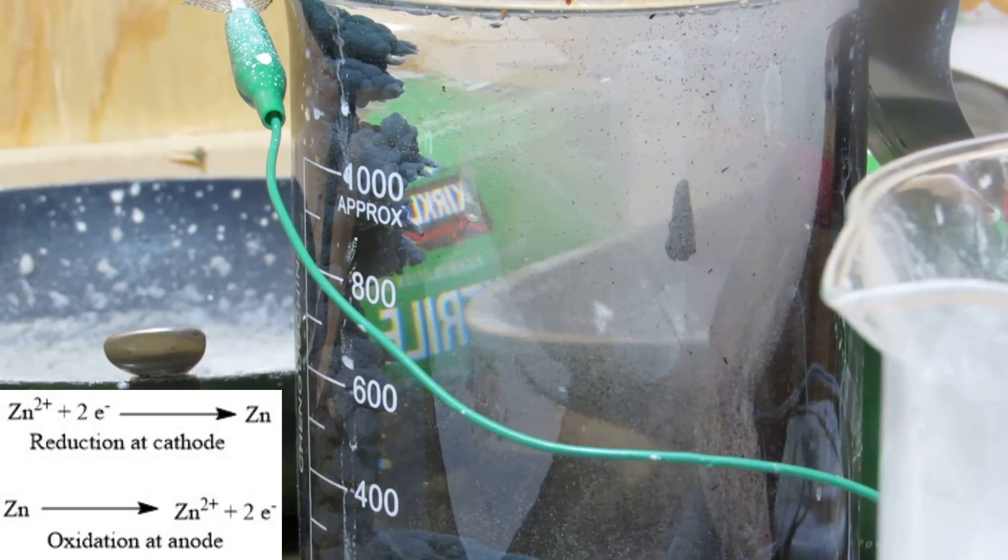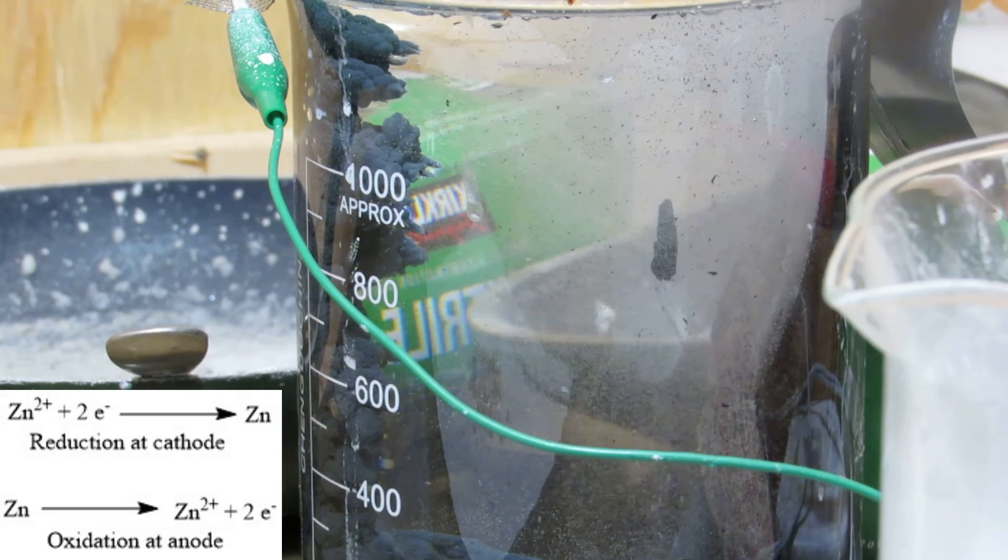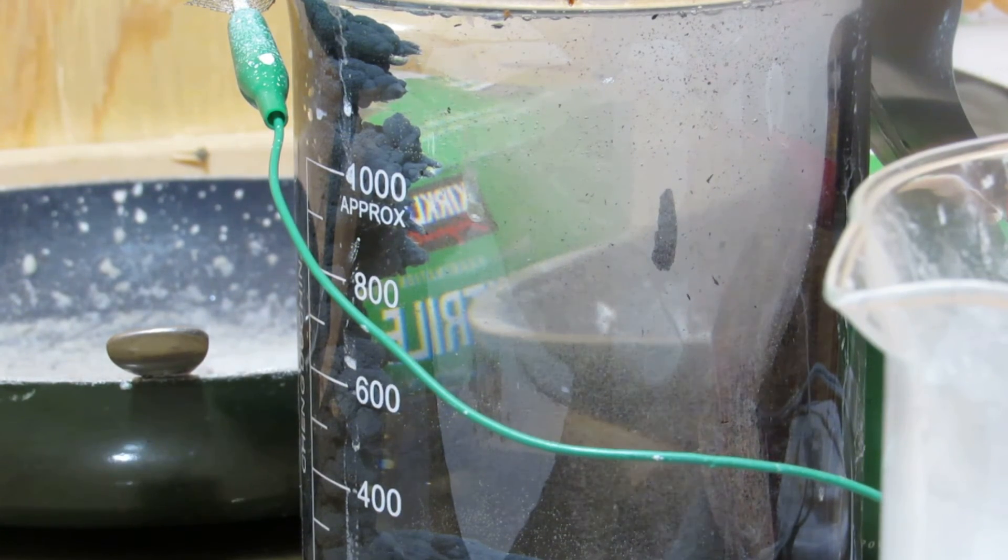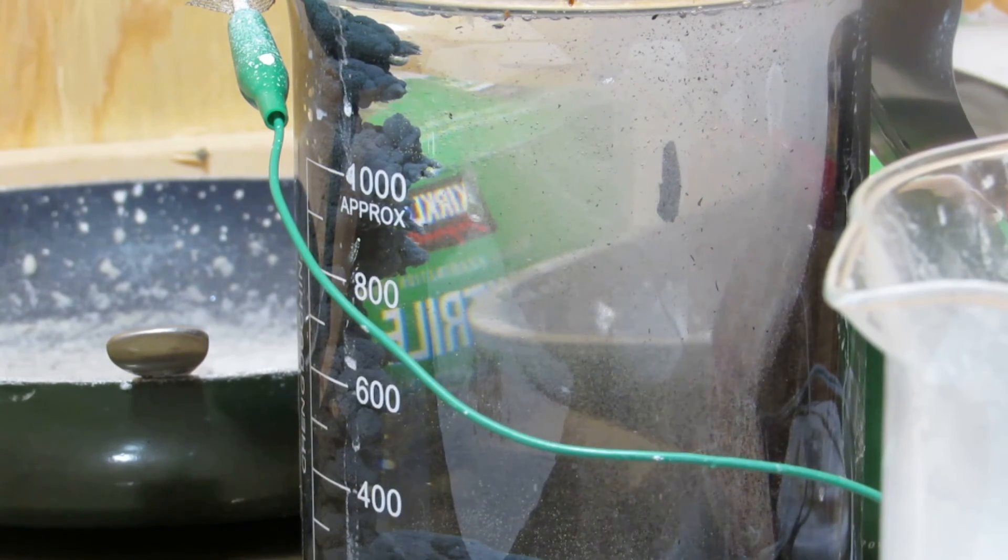As the reaction proceeds, the zinc anode is oxidized and dissolves into solution, and zinc is reduced at the cathode and forms zinc powder. As the anode is consumed, more zinc can be added to the solution to continuously form more zinc powder.